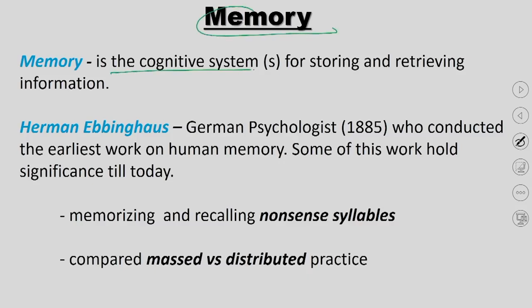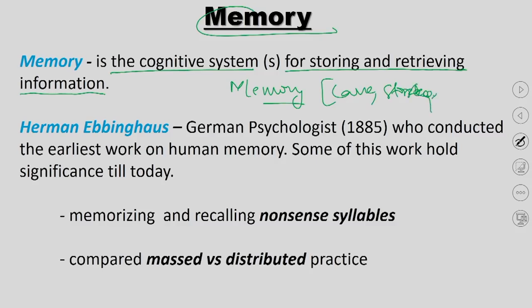Memory has been explained as a cognitive system for storing and retrieving information — a two-part system that not only stores but also helps retrieve information. Early conceptualizations included a cave, a storage unit, and a wax tablet. The scientific study of memory started with Herben Ebbinghaus.